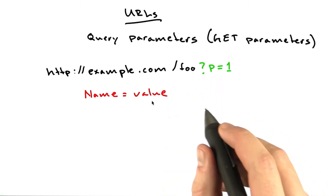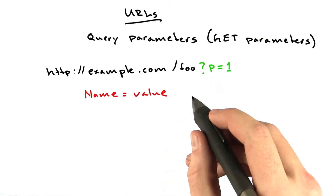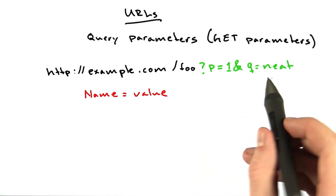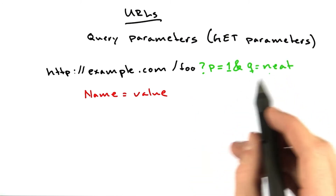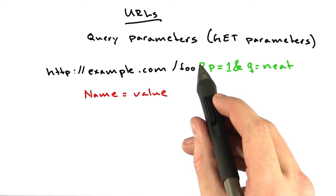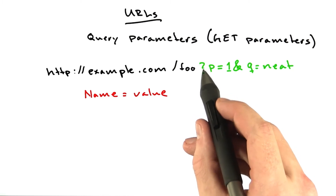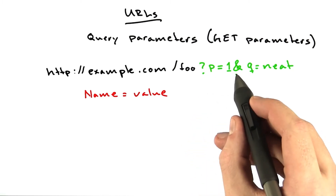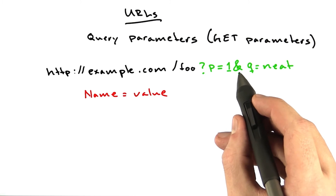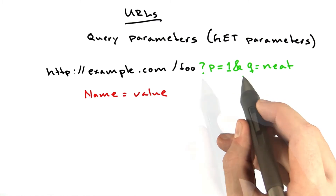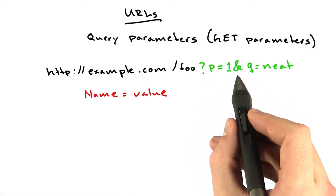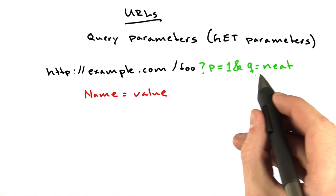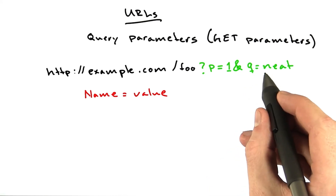We can make this a little bit more complicated by adding more query parameters. We've added a second query parameter. The first query parameter is separated from the URL using a question mark. All of the following parameters are separated from each other using ampersands — the first one gets a question mark, the next one gets an ampersand. In this case, the new parameter is q and it equals the string 'neat'.